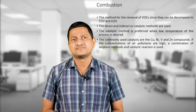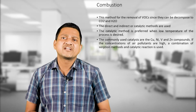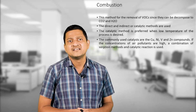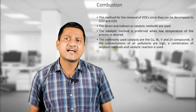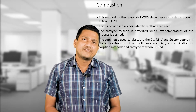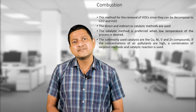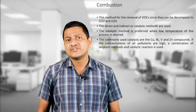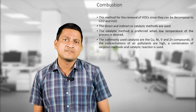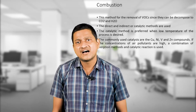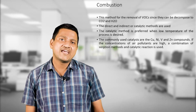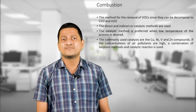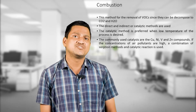The third method of controlling gaseous pollutants is combustion — that is, burning out. This method is used for the removal of volatile organic compounds, since they can be decomposed to carbon dioxide and water. Direct, indirect, and catalytic methods are used for the combustion process. The catalytic method is preferred when low process temperature is desired. Commonly used catalysts are Cu, Ni (nickel), V, and zinc compounds. If the concentration of air pollutants is high, a combination of suction and catalytic reaction is used.